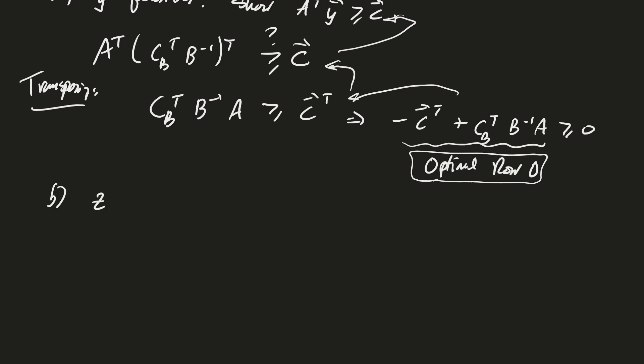Part B: Z equals w. Well, let's just write down our z. Z is equal to c_B transpose B inverse B. Let's just go ahead and replace that with, isn't that y transpose times b? And isn't that our w? Oh, we're done. That was fast.